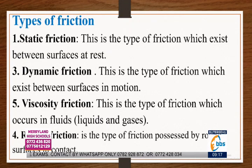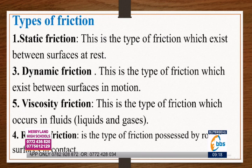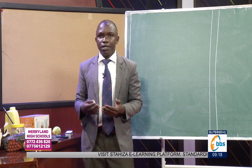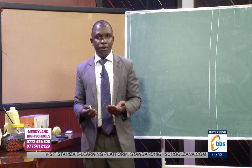The fourth type is rolling friction — the type of friction possessed by round surfaces in contact. Those are the four types of friction we look at at our level.